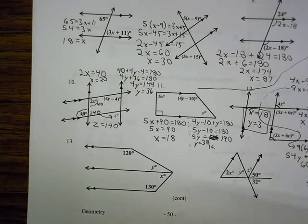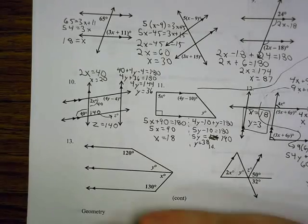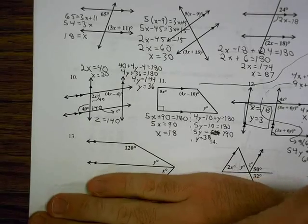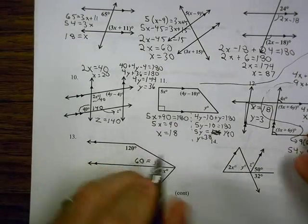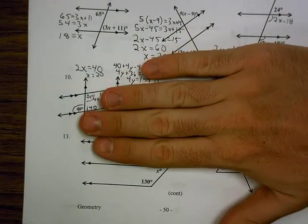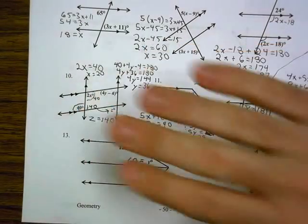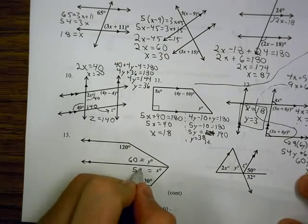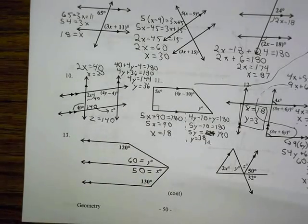Okay, we go down to 13. 13 is a lot like number 11. We have two separate consecutive interior problems just combined into one. By the top half, I have that 120 and y are consecutive interior, so that means y needs to be 60 to add to 180. The bottom half, I have 130 and x are consecutive interior. That means x needs to be 50 for it to be supplementary.